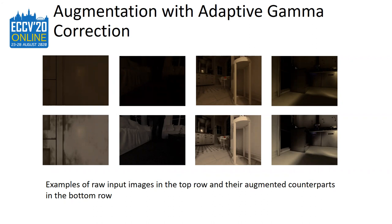Here we can see examples of the test time augmentation with adaptive gamma correction. On the top row, we can see the raw input images, and in the bottom row, we can see their augmented counterparts.